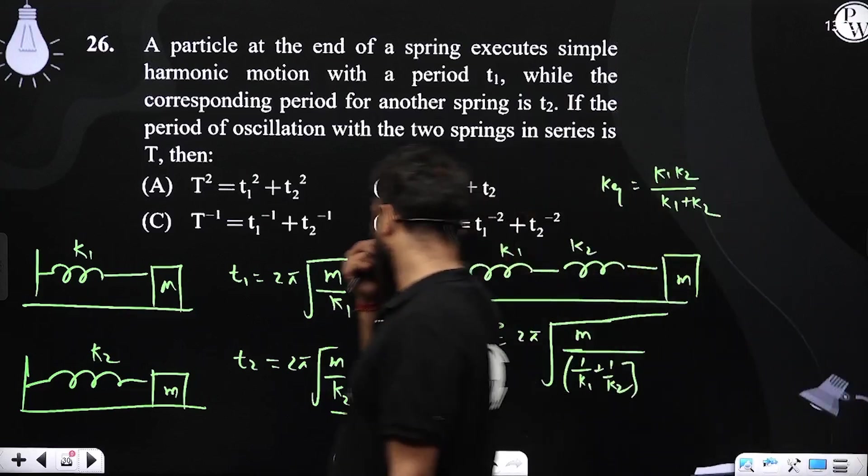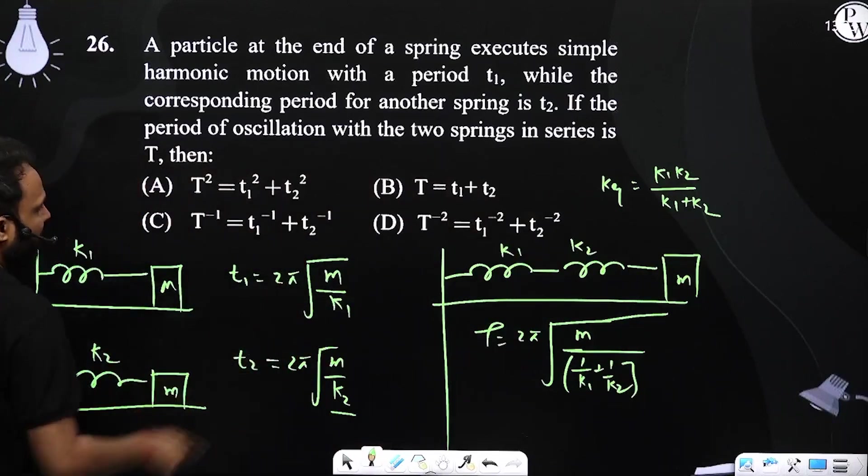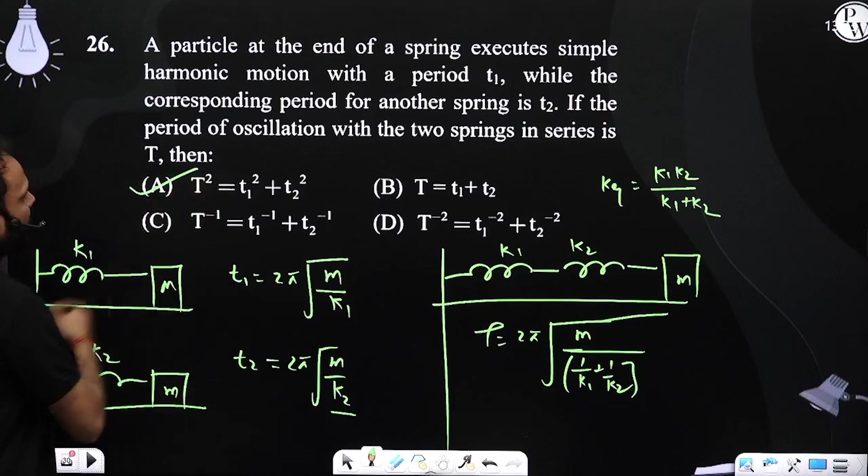अगर हम तिनों को square करके, इन दोनों को square करके जोड़ें, तो हम देखेंगे कि basically उसके equal होगा, which means option number A is basically our correct answer.